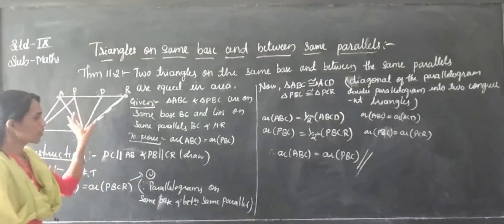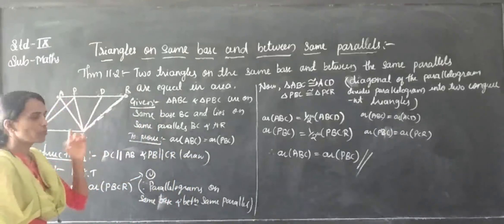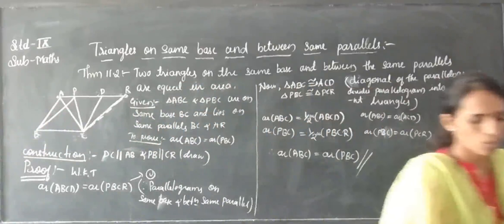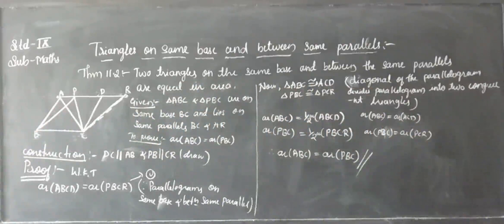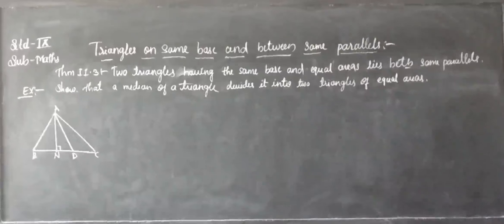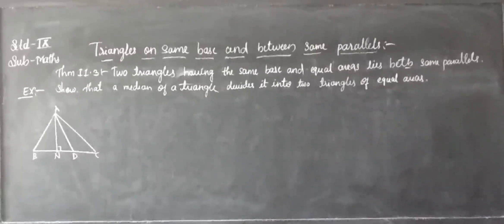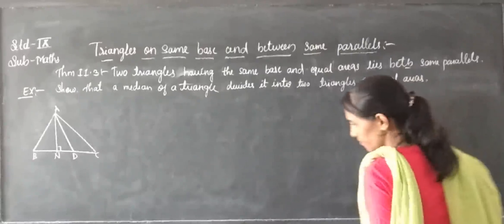So in that, both of these two are equal. Already, if you see, these two are equal. Subsequently, these two will become equal. Therefore, we get that area of triangle ABC is equal to area of triangle PBC. This is the proof. If triangles lie on the same base and between the same parallels, the areas of both triangles are equal. This is theorem number 11.2.